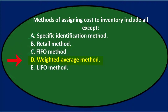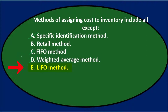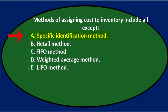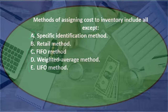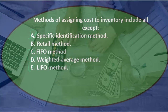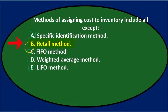D. Weighted average method — that's clearly a flow method that belongs in the list. E. Last in, first out method — also a method we've dealt with here. These should all sound very familiar. The retail method isn't one we typically deal with in terms of flow methods, so that's going to be the answer.